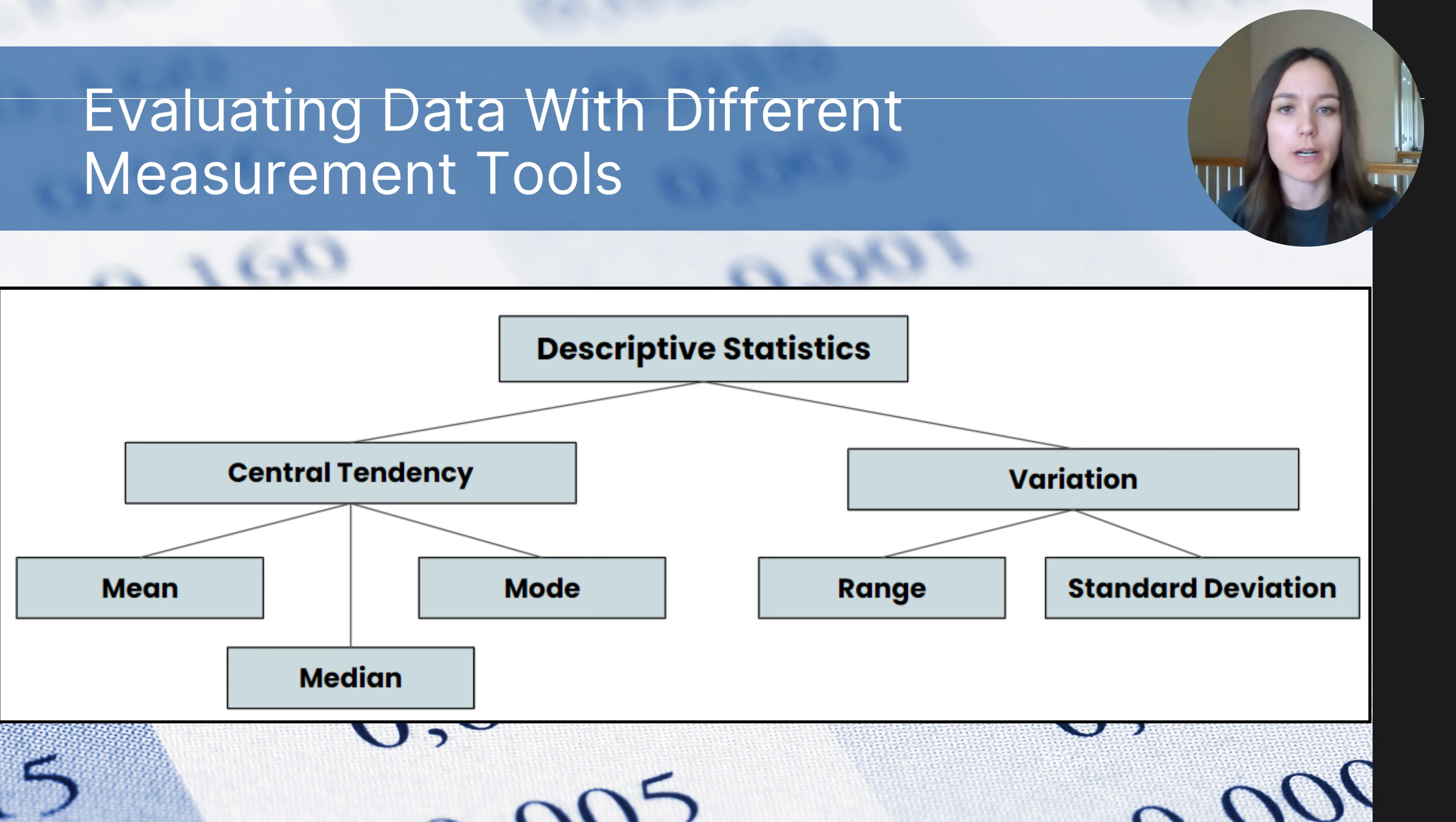So let's talk about descriptive statistics. As you can see in this diagram, these are the different types of descriptive tools we can use when we are summarizing data we collect. And that you are likely familiar with mean, median, mode, and range.